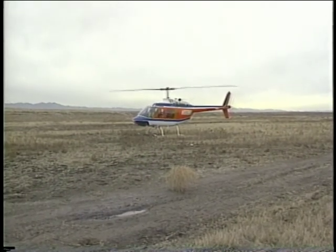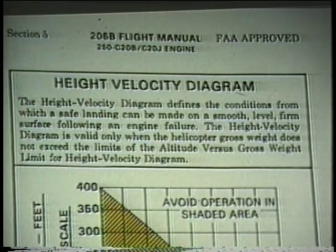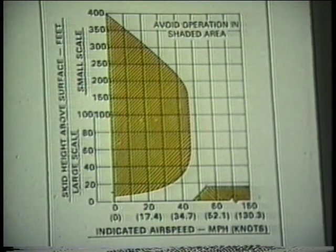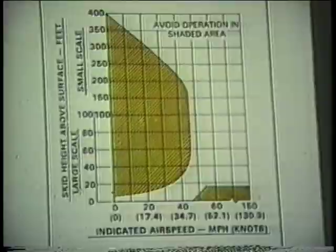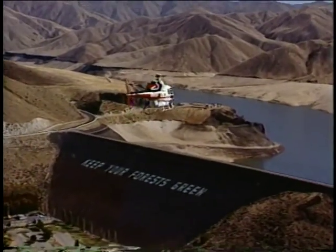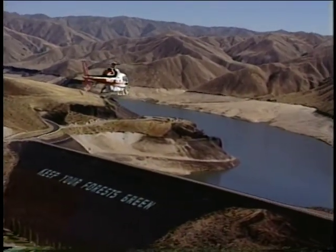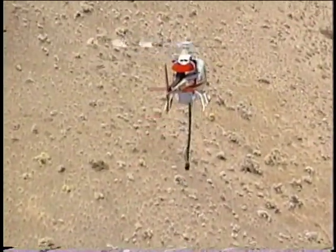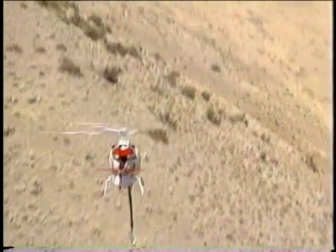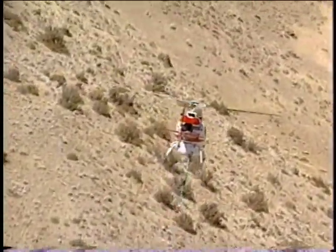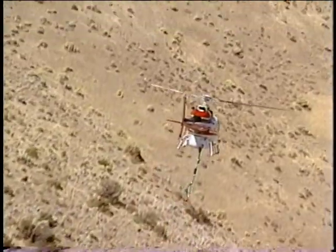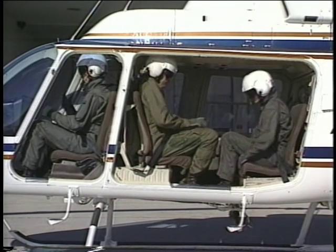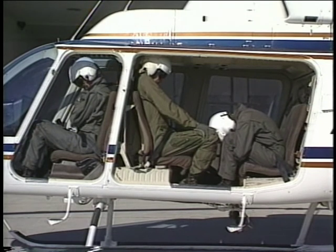Each helicopter model has a chart called the height velocity diagram. This chart shows the combination of airspeed and altitude from which a safe autorotation can be made. The safest flying is done above 500 feet and at cruise airspeed. This is not to say do not go low and slow — just limit your flying in this area to only that which is necessary to get your job done. Remember to assume the emergency position during any autorotation from any height.